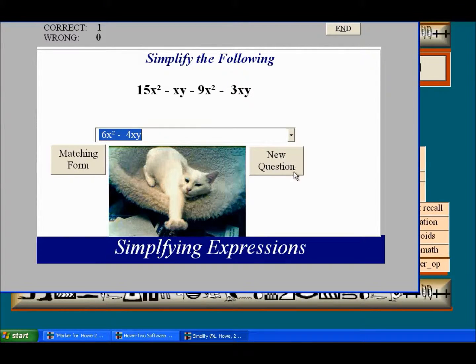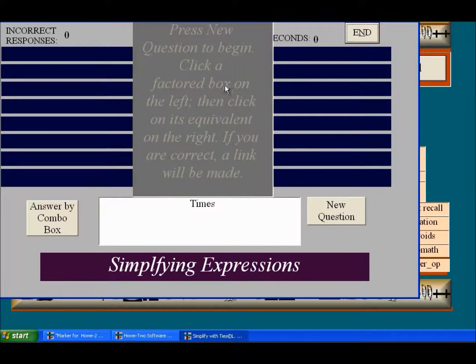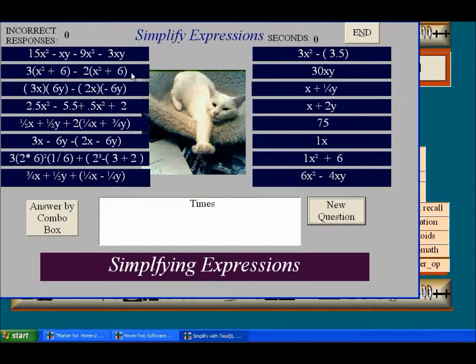You can do this this way, new question, or you could go to the matching form where it gives all the problems. And that one we just did, this one pairs up. Oh here, it's this one. 15 minus 9 is 6. This one. Click on it, turns green.